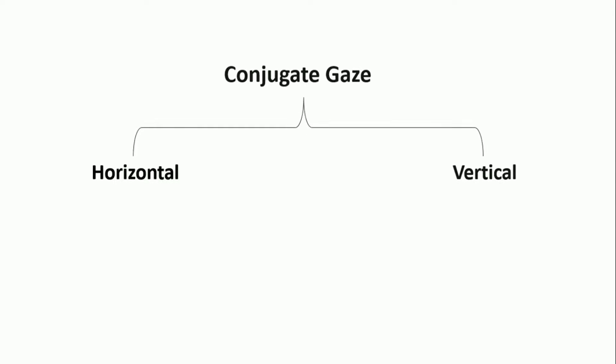Conjugate gaze is the ability of the eyes to look in the same direction at the same time. It can be horizontal or vertical. Horizontal conjugate gaze can be voluntary or involuntary.